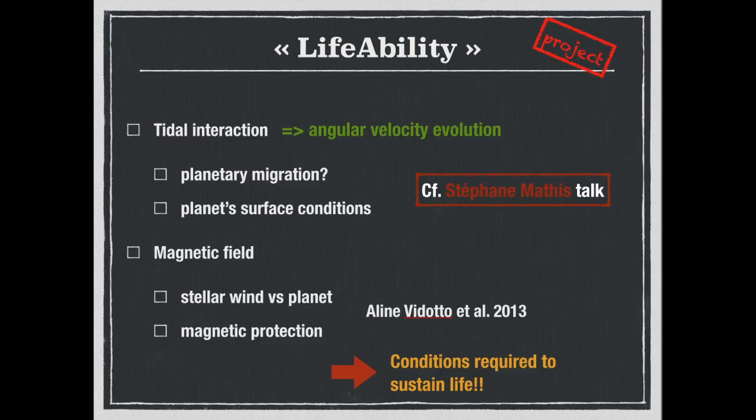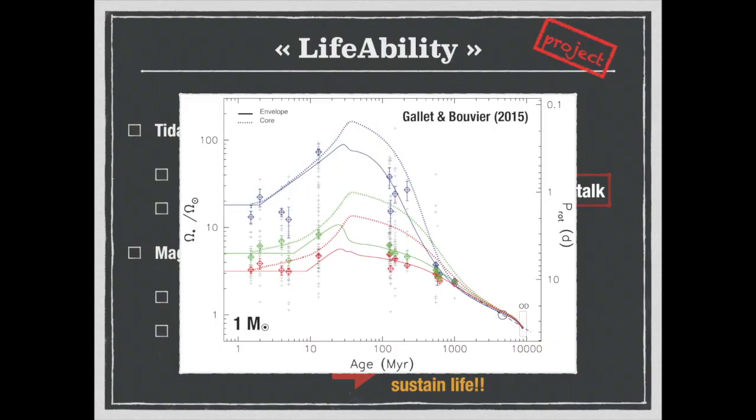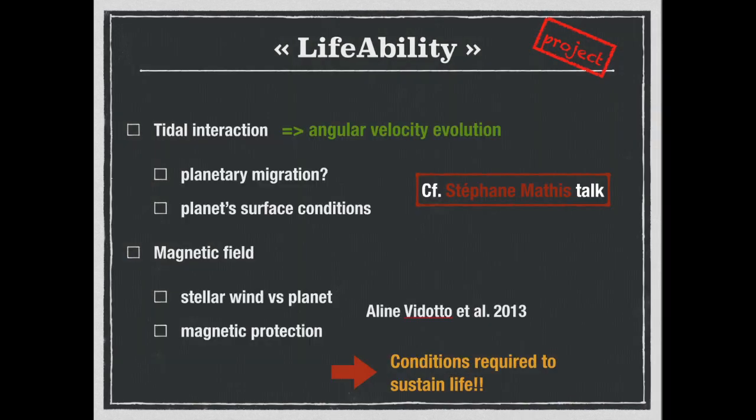To get realistic angular velocity evolution for low-mass stars, in order to study the planet migration, how this affects the continuous habitable zone, or the planet surface conditions, and I refer you to the Stefan Mathis talk for this.